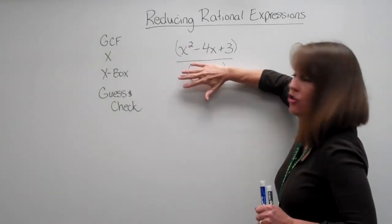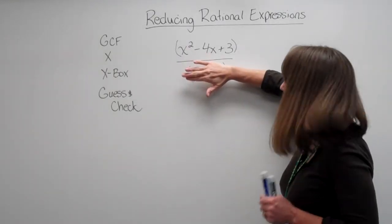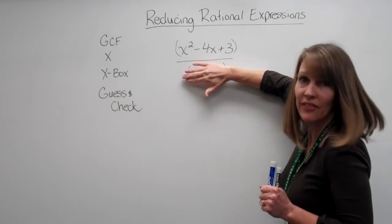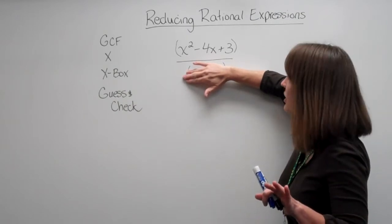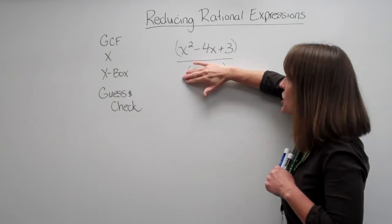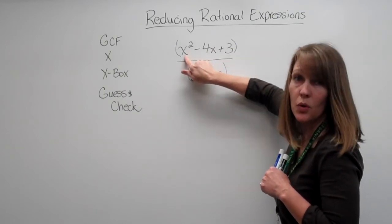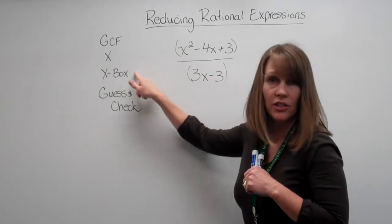So we'll look at our first one here. We're going to factor just the top. You say, alright, can we factor out a greatest common factor? Check for that first. Nope. Okay, so what strategy are we going to use if it's just an x squared? Well, that would be our x, right?